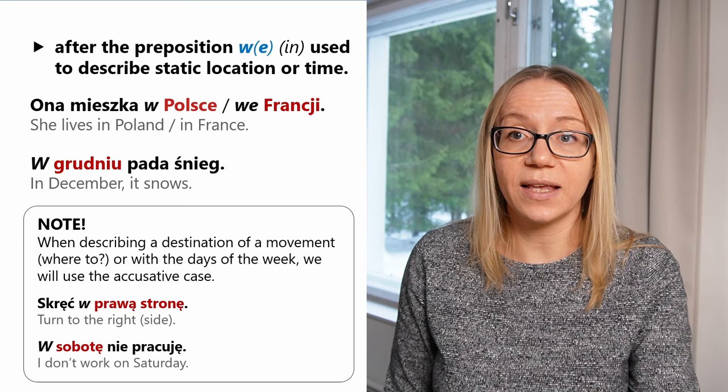For adjectives in the locative case, it is quite straightforward. Masculine and neuter adjectives have the ending 'im' or 'ym' — 'ym' after K and G. For example: 'dobry' becomes 'dobrym,' 'wysoki' becomes 'wysokim.' Feminine adjectives have the ending 'ej' or 'iej' after K and G. For example: 'dobra' becomes 'dobrej,' 'wysoka' becomes 'wysokiej.' You can look at the summary slide to see all the endings for nouns and adjectives in the locative singular at a glance.